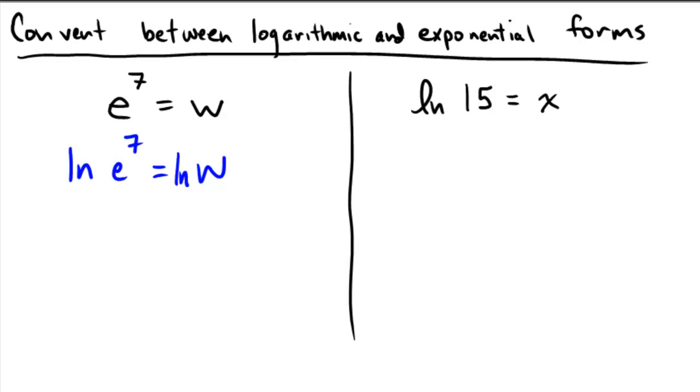We're doing the same thing to both sides. We're taking natural logarithm of the left and of the right. And the purpose of natural logarithm is that it undoes exponential. So now we have 7 equals ln w. And that's the logarithmic form of that exponential.